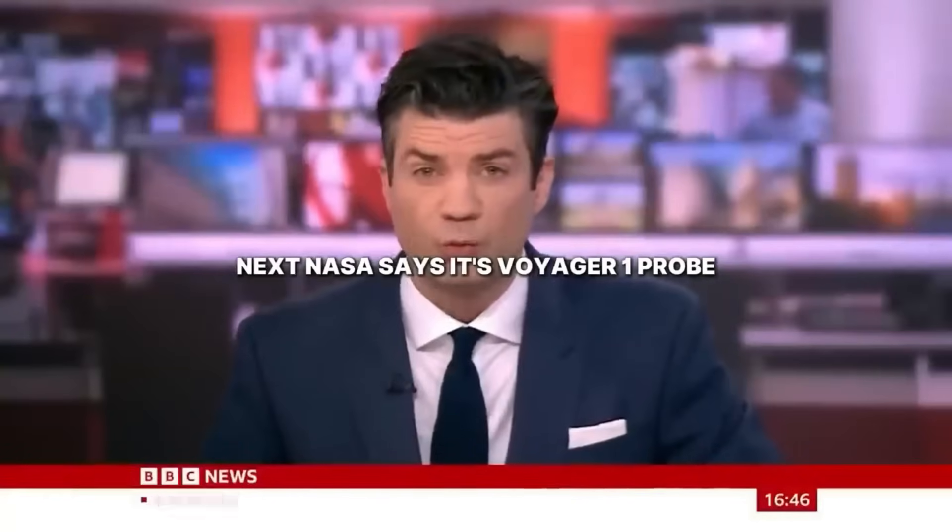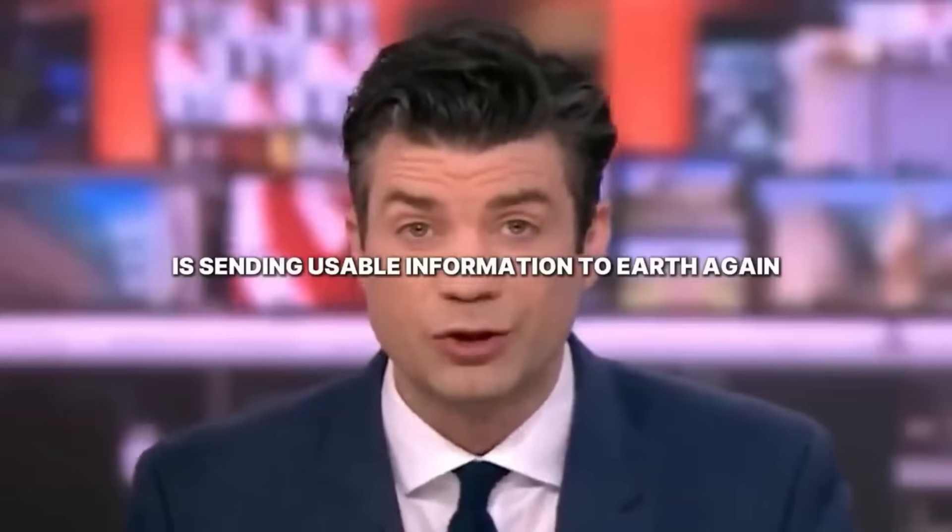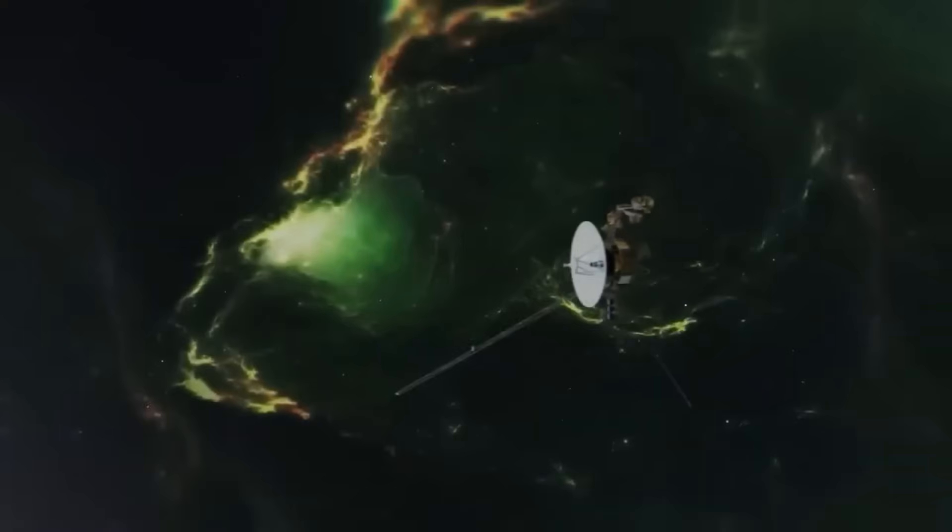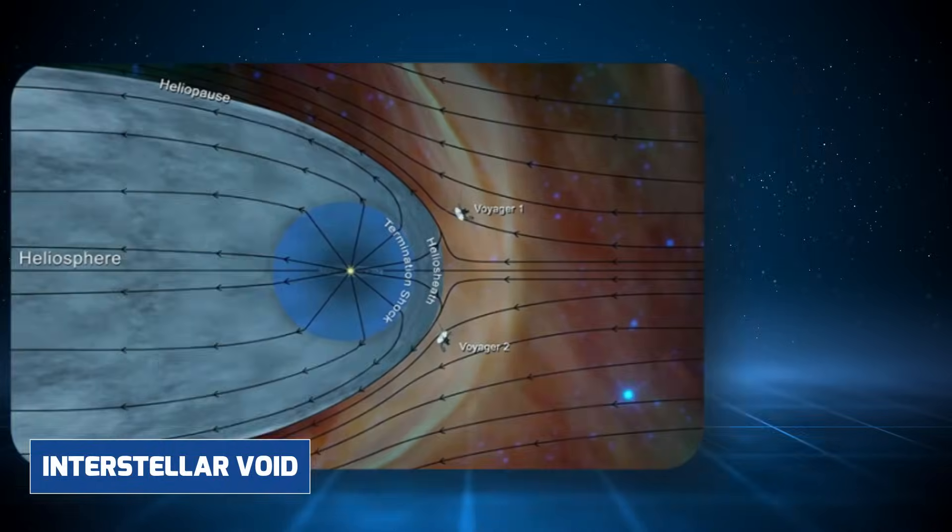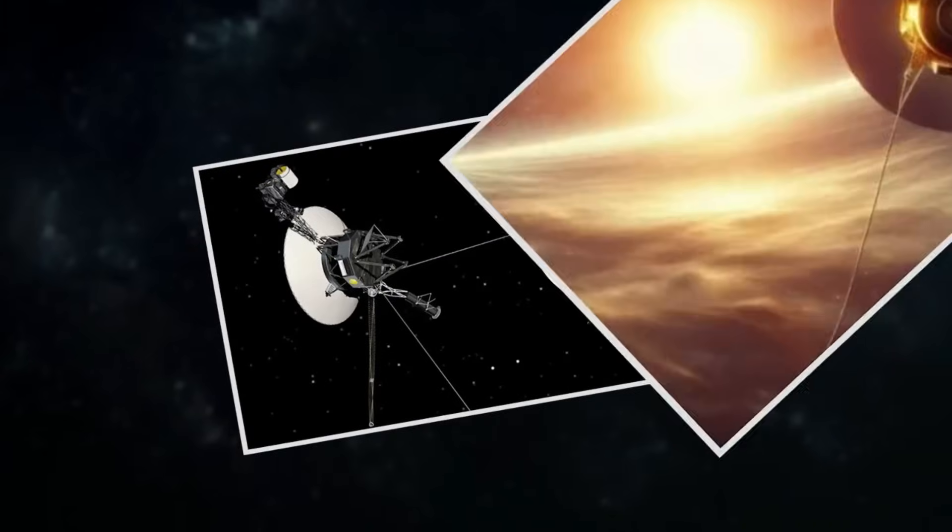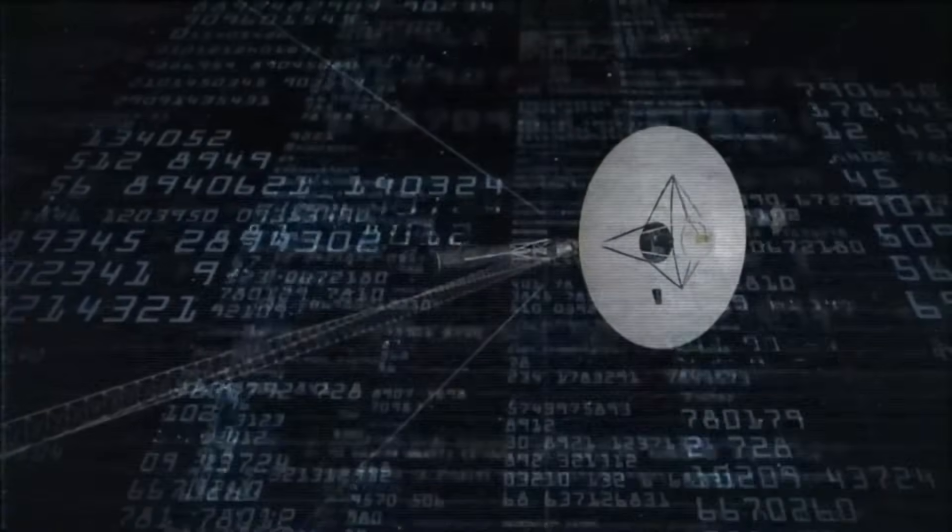NASA says its Voyager 1 probe, the most distant human-made object in the universe, is sending usable information to Earth again. More than 14 billion miles from Earth, Voyager 1 has been drifting in the interstellar void, a tiny emissary from a distant blue world carrying the whispers of human civilization beyond the boundaries of the solar system.